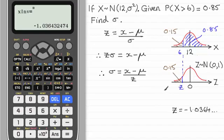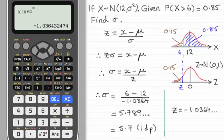And so it's just a question of substituting this value in for z. The observed value x is 6 and the mean mu is 12. If you substitute those values in and then just work this out you'll find that you get 5.7 for the standard deviation to one decimal place.